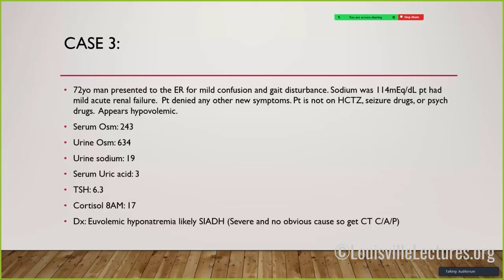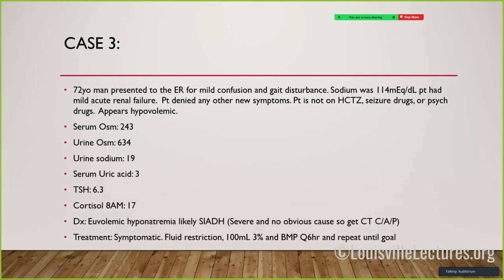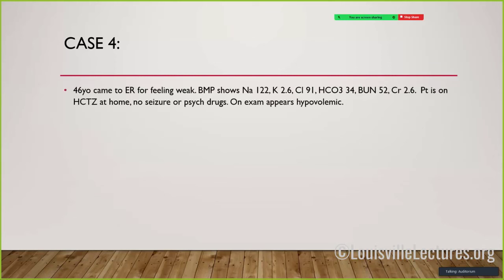Most of the time you don't find anything when you look, but in this case we did. Treatment: patient was symptomatic but not seizing or obtunded, so he received 3% sodium chloride aliquots every 6 hours rather than front-loading. He was eventually managed with salt tablets, but these didn't work long-term and he ended up on a vaptan.